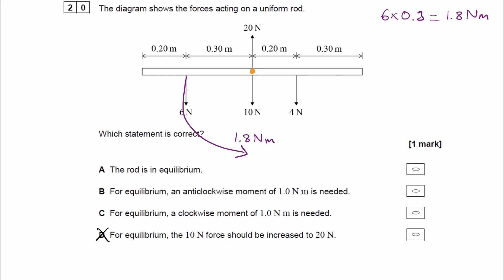And for the 4 Newton force, so that would be 4 multiplied by 0.2, which is 0.8 Newton meters, that goes this way around the pivot. So that would be a clockwise moment.